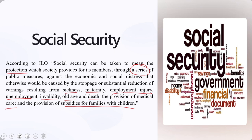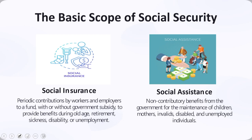Social security warrants discussion because it has a concern towards many critical issues happening within the realm of the workplace. When you look into the basic scope of social security, there are two important aspects: social insurance and social assistance. Social insurance is about periodic contributions by workers and employers to a fund, with or without government subsidy, providing benefits during old age, retirement, sickness, disability, or unemployment.